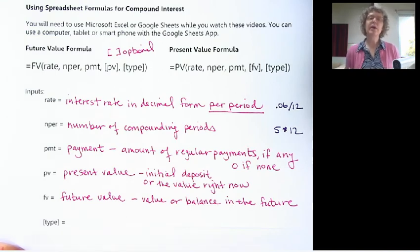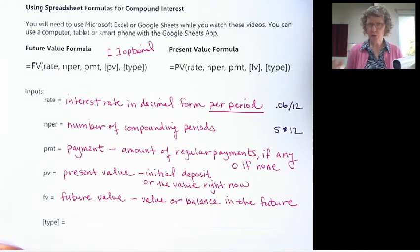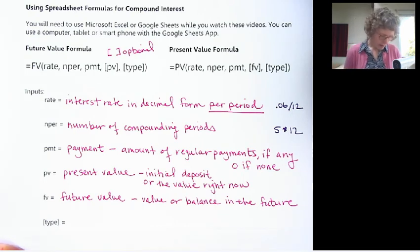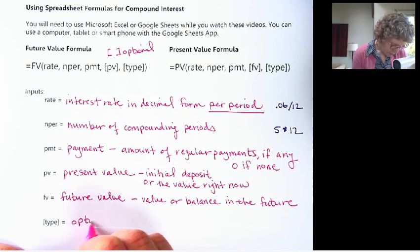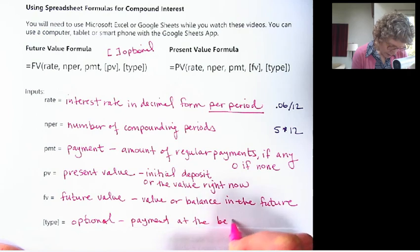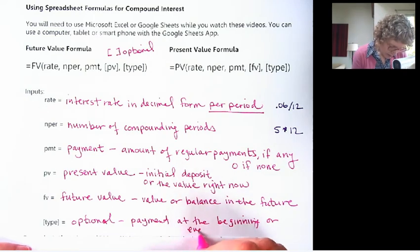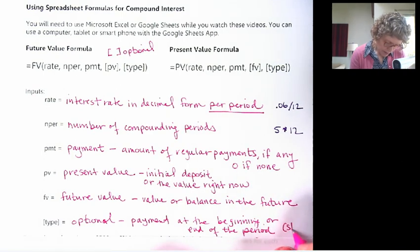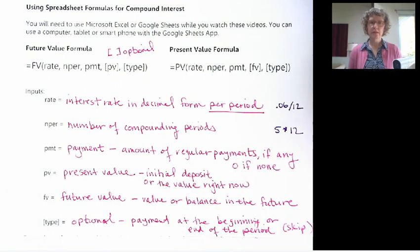The type we're really not going to use. It has to do with whether the payment is made or comes in at the beginning or the end of the period. Like the beginning of the month or the end of the month. If you take accounting, I'm sure you'll get into this more thoroughly. But for our purposes, we're not really going to make a distinction between the end and the beginning of the period. So this is optional. The payment at the beginning or end of the period. So for our purposes, we're going to skip this one.